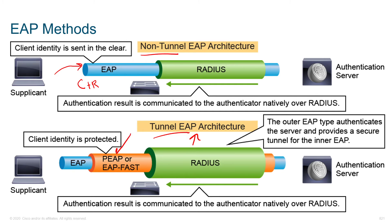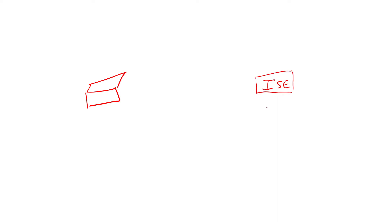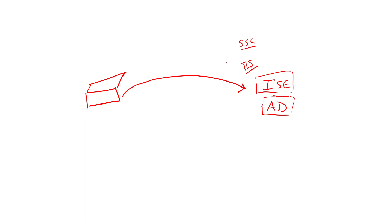One of the tunneled modes is called PEAP, or Protected EAP. This works really similar to a web server. You've got a supplicant that wants to authenticate using a username and password. When that authentication takes place — let's say we've got a RADIUS server back here, and this also works against Active Directory — we're going to connect to that server to authenticate, and that server is going to have a TLS certificate. That certificate says this really is the server, and it's the identity certificate of the server being pushed down.